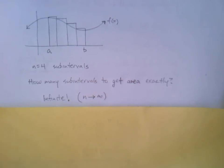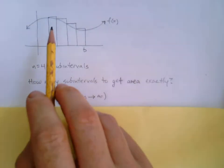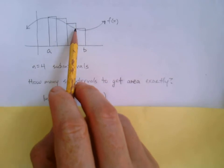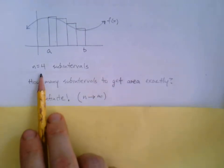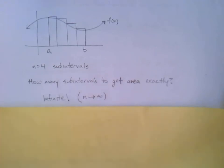If you want to get it exactly, then all of those little bits that hang off the end need to disappear completely. So that'll happen with, in theory, an infinite number of rectangles. So our number of sub-intervals goes to infinity. Okay, that raises another question.